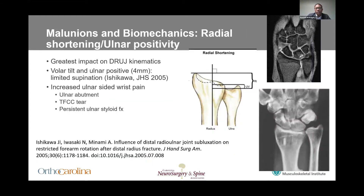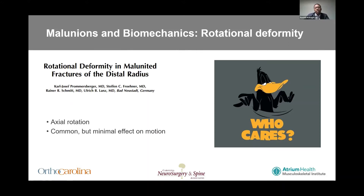Radial shortening and ulnar positivity may have the greatest impact on DRUJ kinematics. This will limit the patient's supination. These patients often present with ulnar-sided wrist pain due to a multitude of reasons, including ulnar abutment, TFCC tears, and symptomatic ulnar styloid nonunions. All these fractures do have deformity in the axial plane, but evidence tells us that axial rotation probably doesn't have much effect on motion or functional status, so we don't worry about it as much.